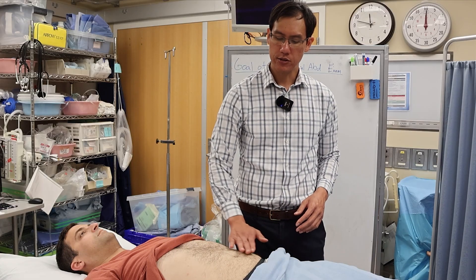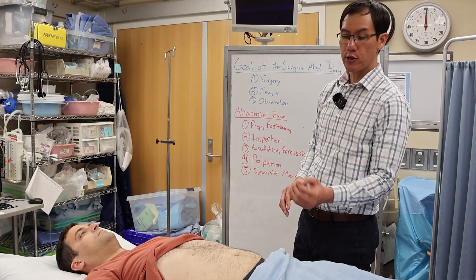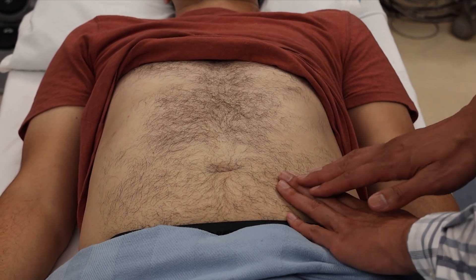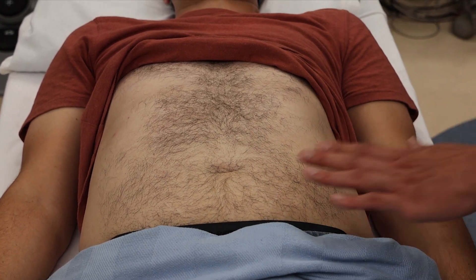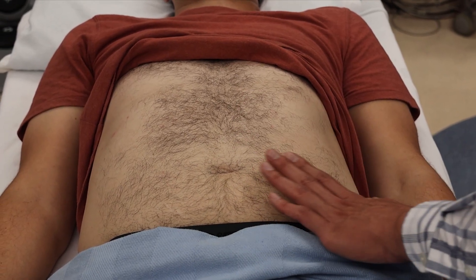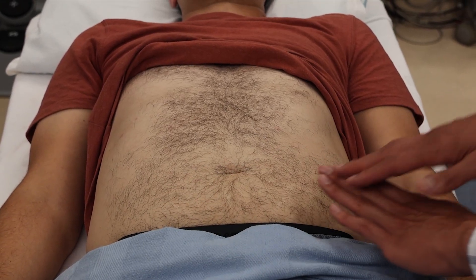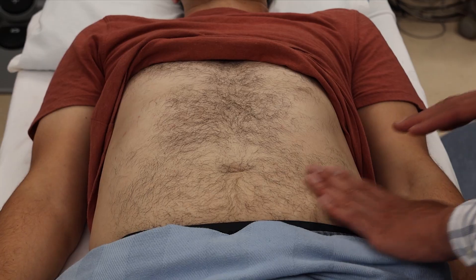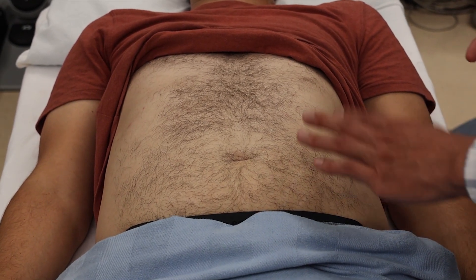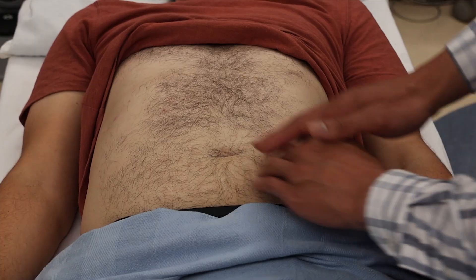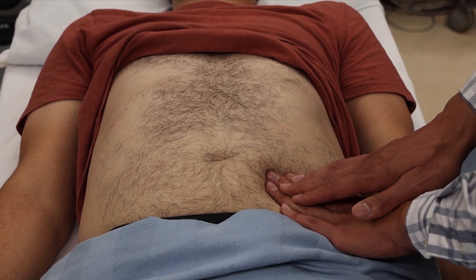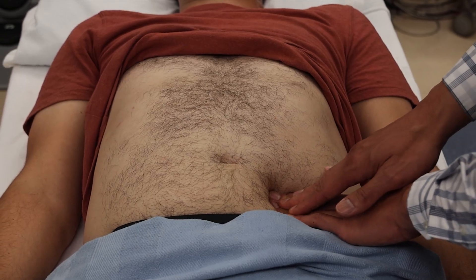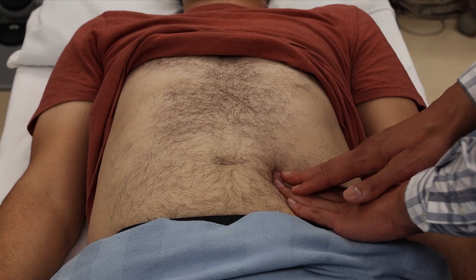Since the patient has right upper quadrant pain, I start at the left lower quadrant. When palpating, use your hand or multiple fingers — never just one finger. You can use one or two hands. Start with light palpation of just the skin and subcutaneous tissue, watching the patient's face as you go. Some patients with anxiety wince at just a light touch even without peritoneal irritation. If comfortable, progressively move to deep palpation, pushing into the viscera and irritating the peritoneum to assess for tenderness.